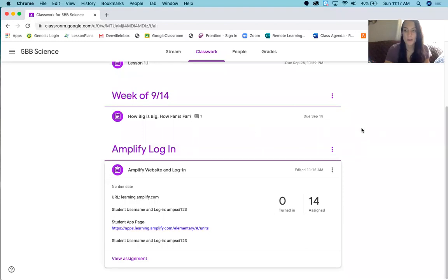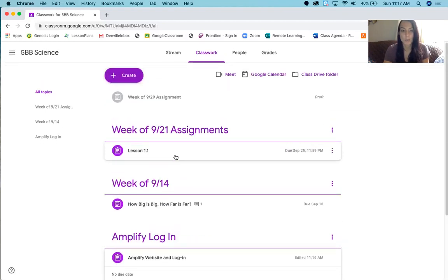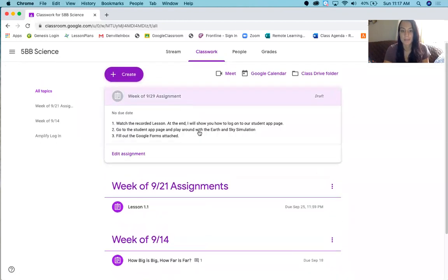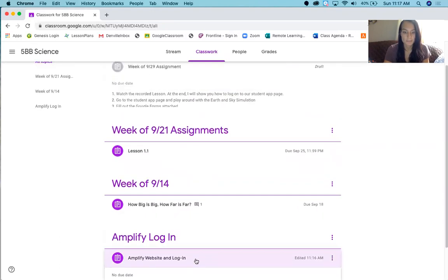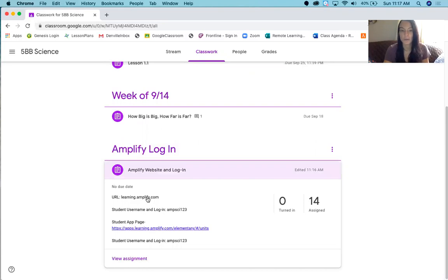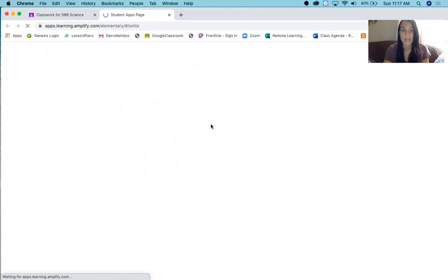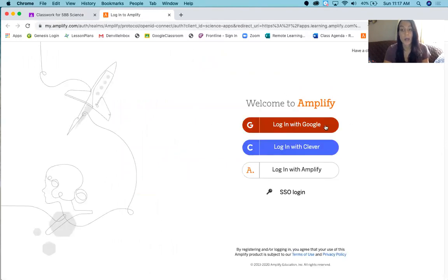I'm on our classroom right now. You're going to click on the link right here that's attached to the Amplify login. It will also be attached to our assignment up here. I'm going to click on this one right now. You're going to click on the app page. You're not going to learning.amplify.com. You're going to click on the student app page. You are not clicking on login with Google. You're going to click on login with Amplify.